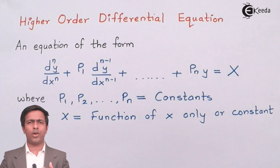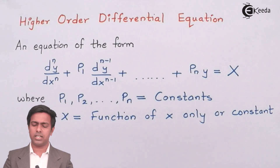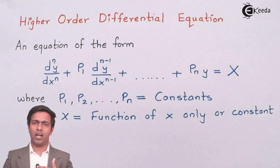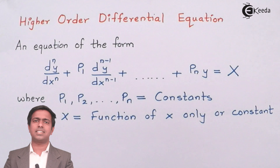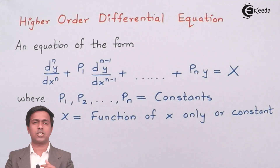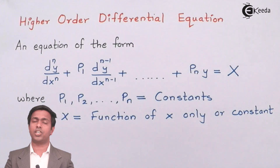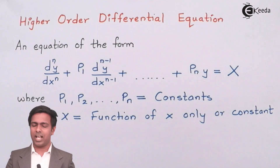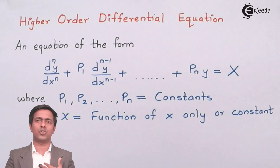You get one or two questions on this chapter in the examination, and in some universities there are more questions on this chapter. This chapter is very easy to learn. The only thing is there are different forms available — the right-hand side X can be any function of x: it can be an exponential function, a trigonometric function, a combination of exponential and trigonometric functions, or an algebraic function. As the right-hand side changes, the solution of this type of equation changes, and that is the most difficult thing for students.